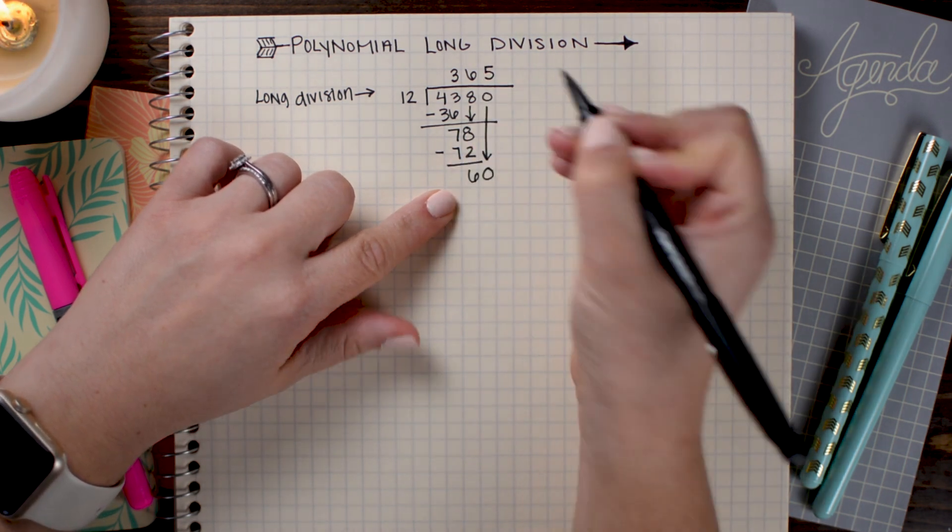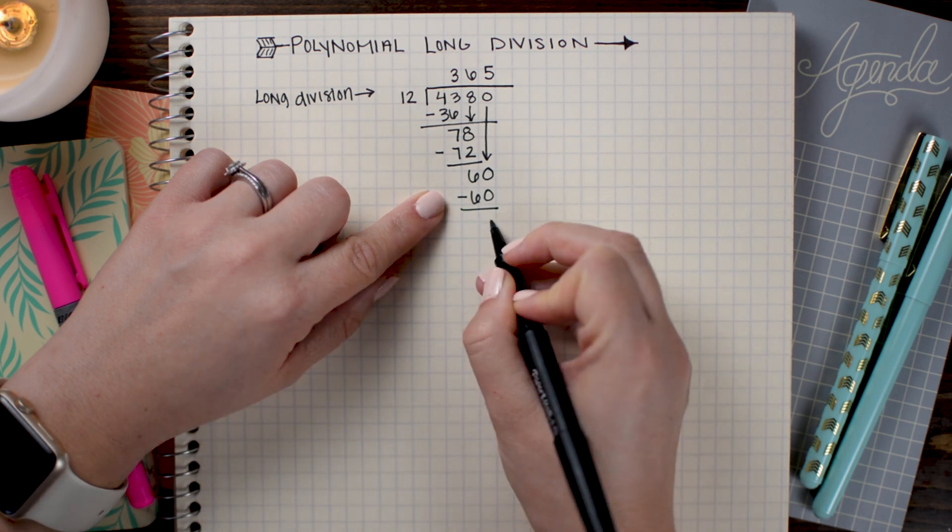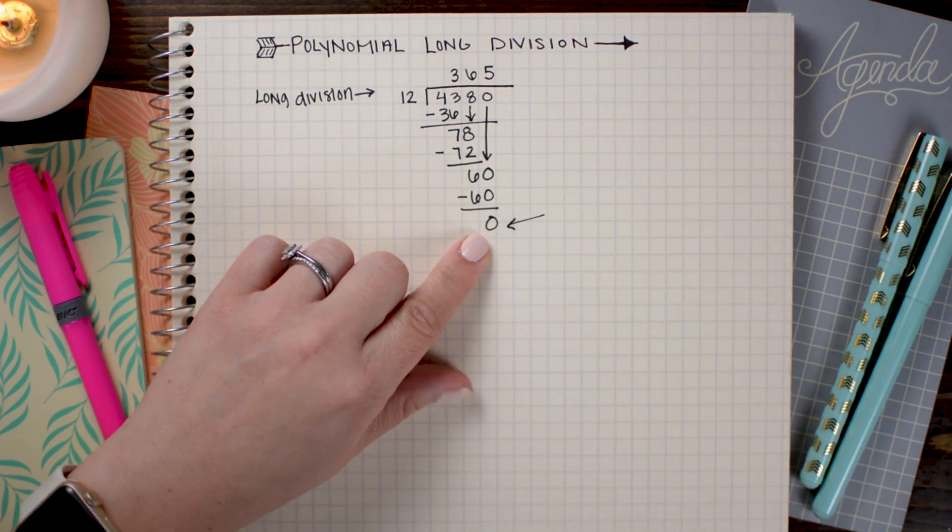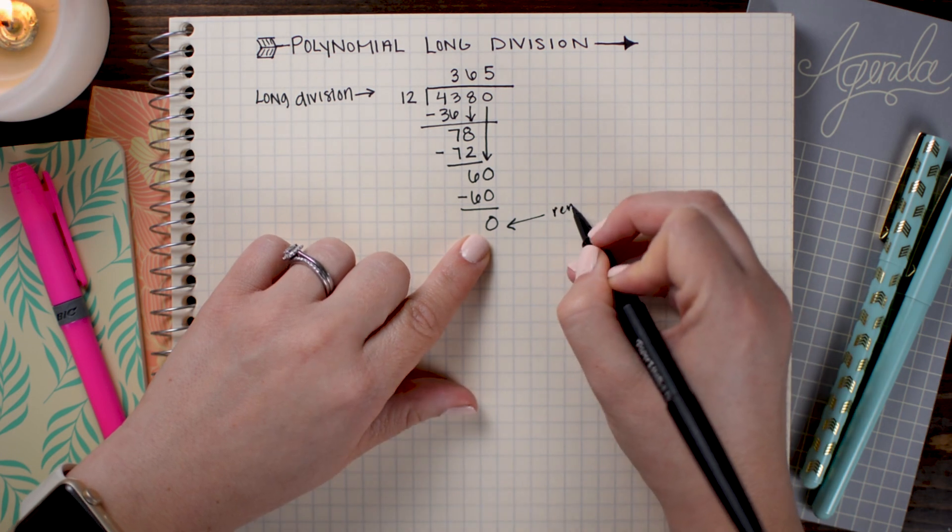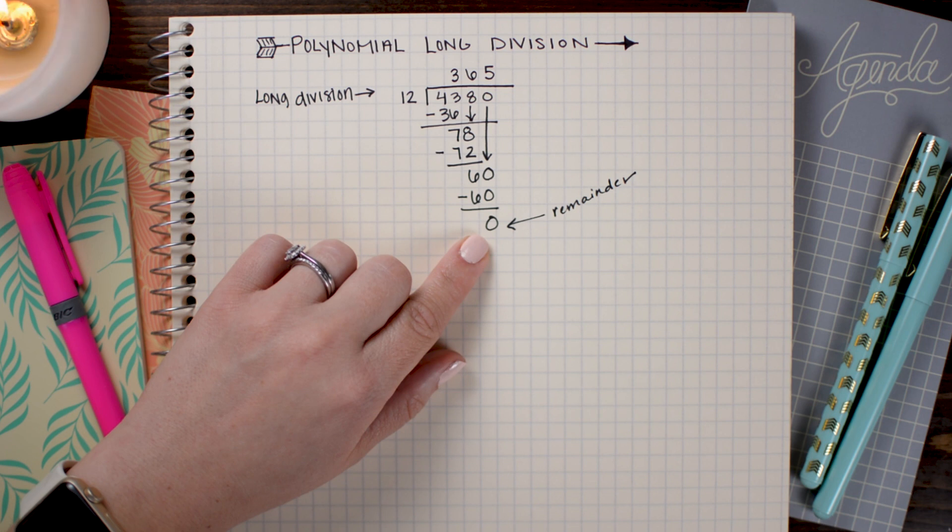Now I'm going to see how many times 12 can go into 60. Since 12 times 5 is 60, I'm going to put a 5 up here and subtract their product, which is 60. And I'm left with 0. Remember that this value here is called the remainder. And that's going to be important in our polynomial long division.